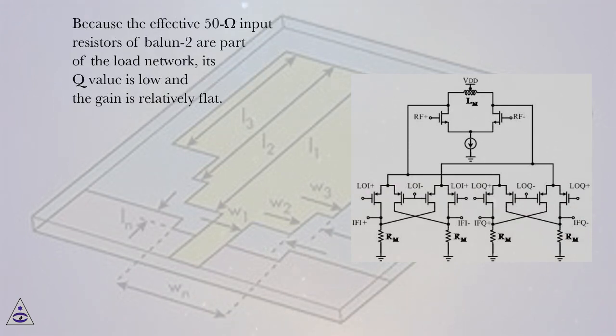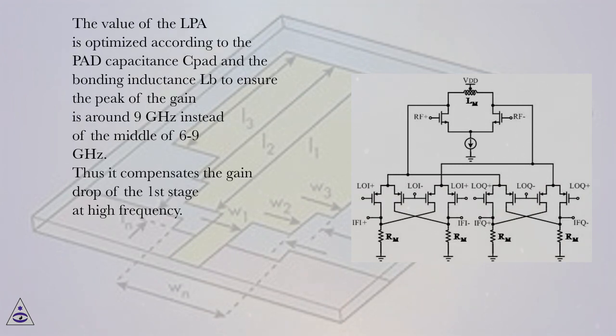Because the effective 50 ohm input resistors of Ballon 2 are part of the load network, its Q value is low and the gain is relatively flat. The value of the LPA is optimized according to the pad capacitance CPA and the bonding inductance to ensure the peak of the gain is around 9 GHz instead of the middle of 6 to 9 GHz. Thus it compensates the gain drop of the first stage at high frequency.